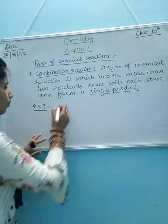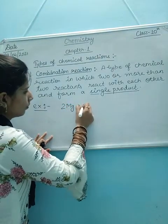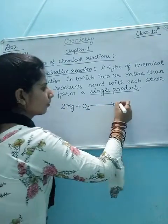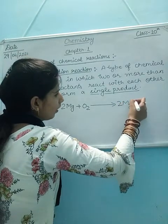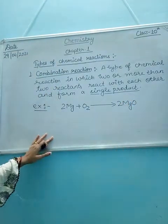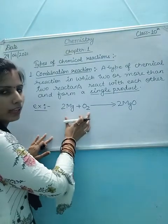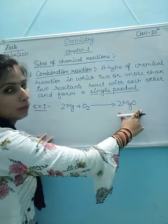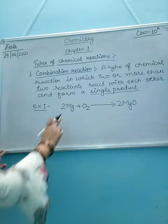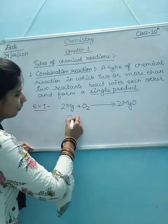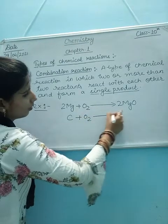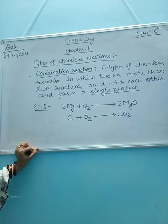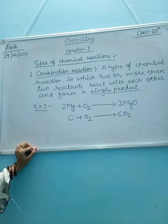Burning of magnesium ribbon: 2Mg + O2 → 2MgO. They react with each other and form magnesium oxide. Also, carbon plus oxygen forms carbon dioxide. This is also a type of combination reaction.